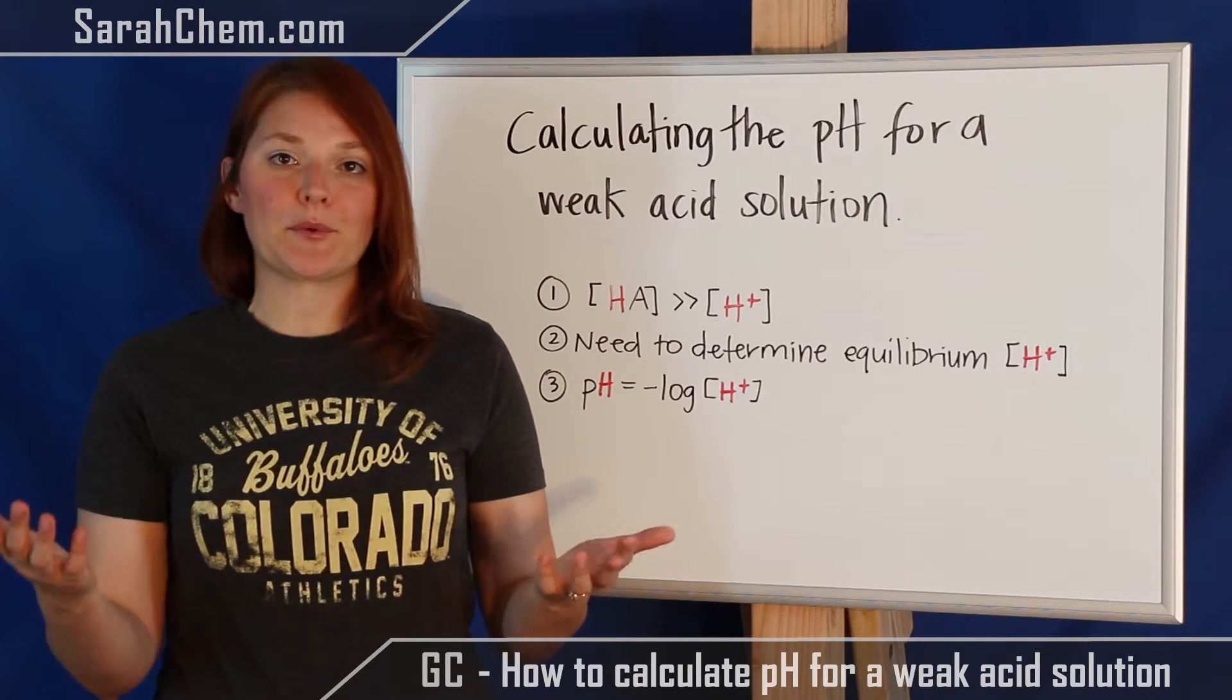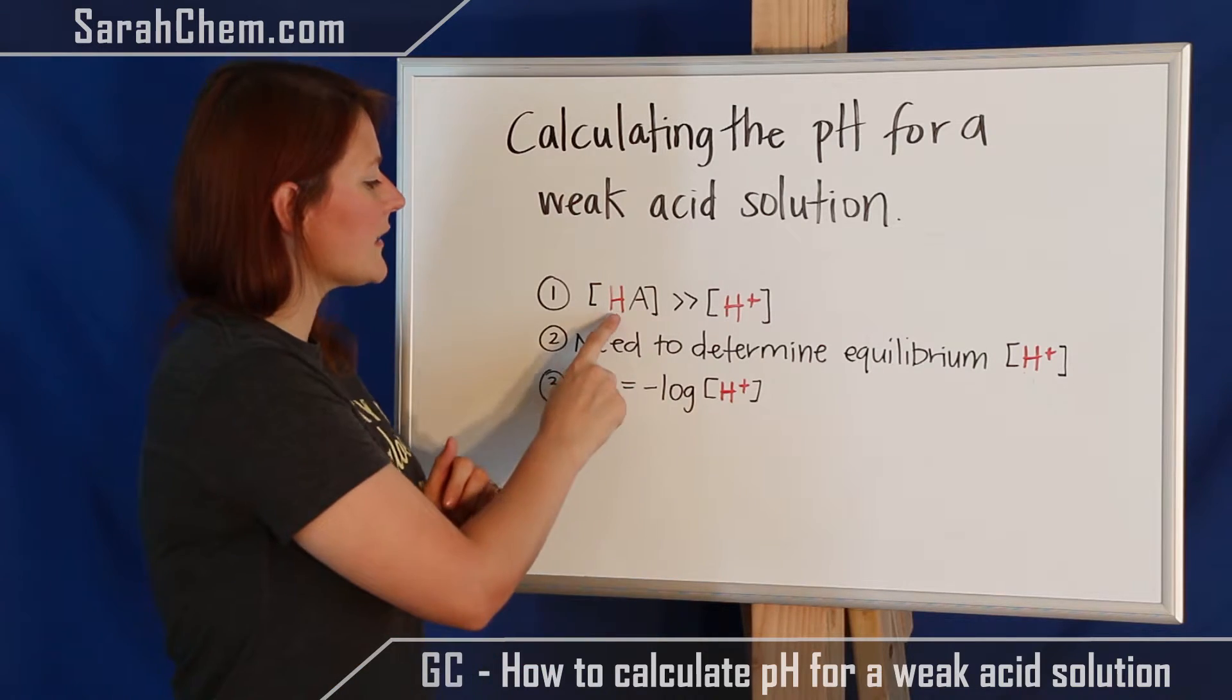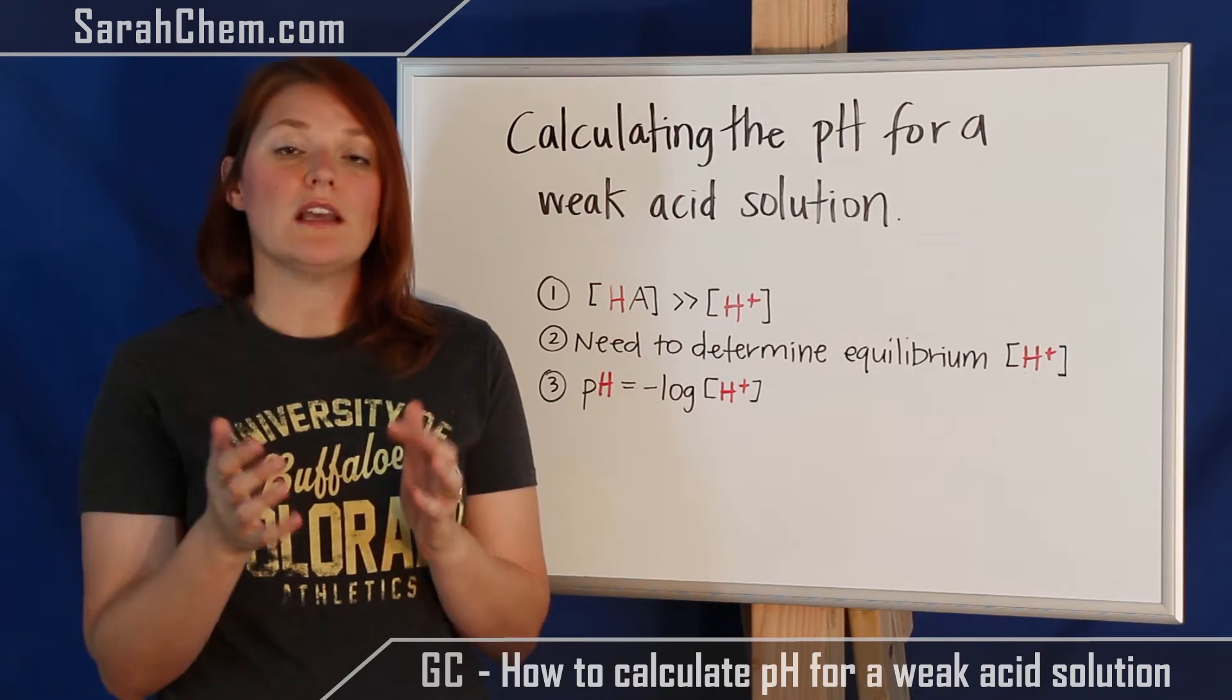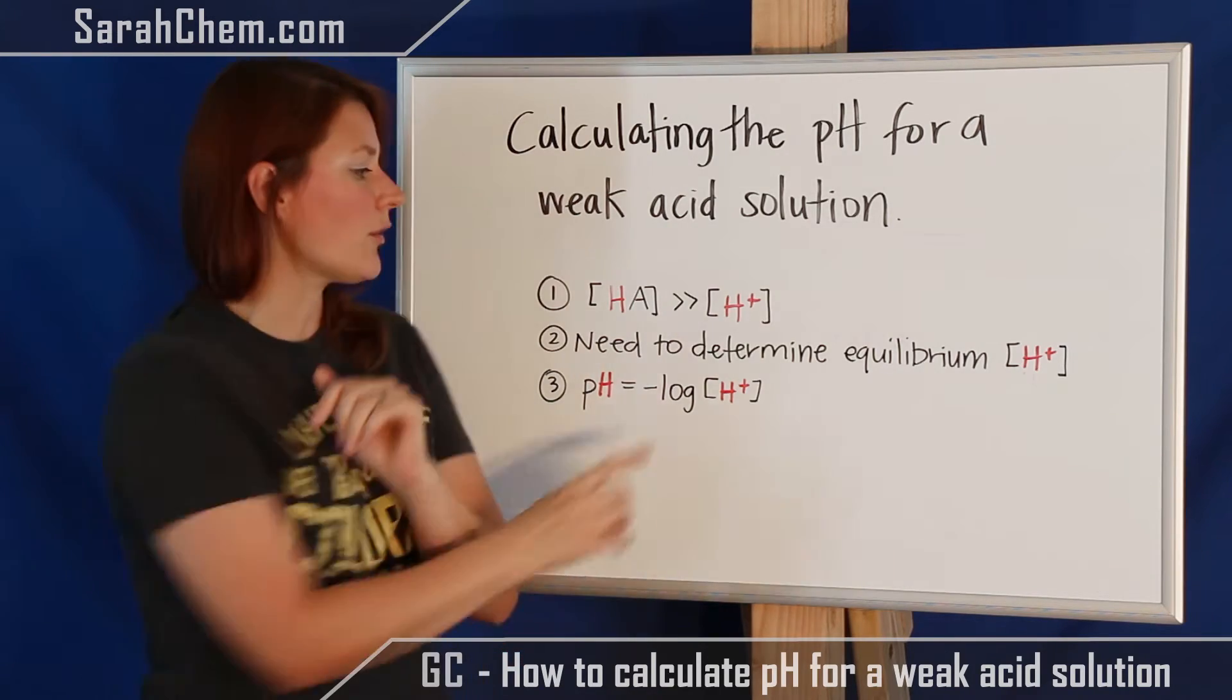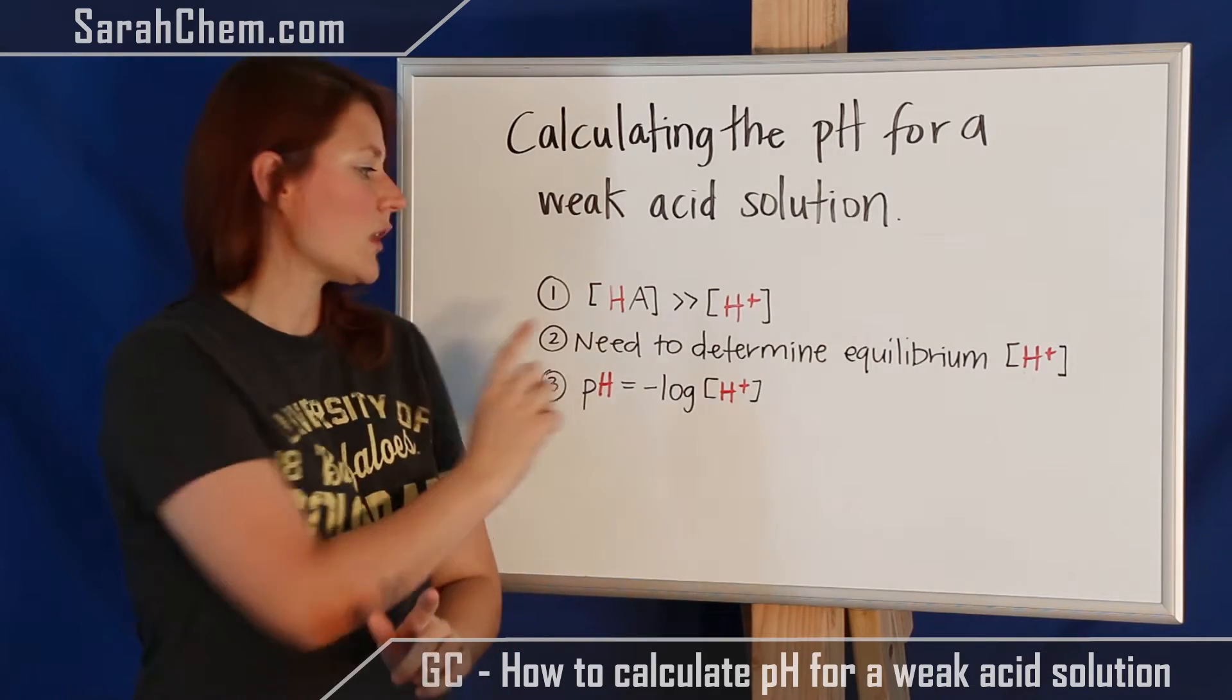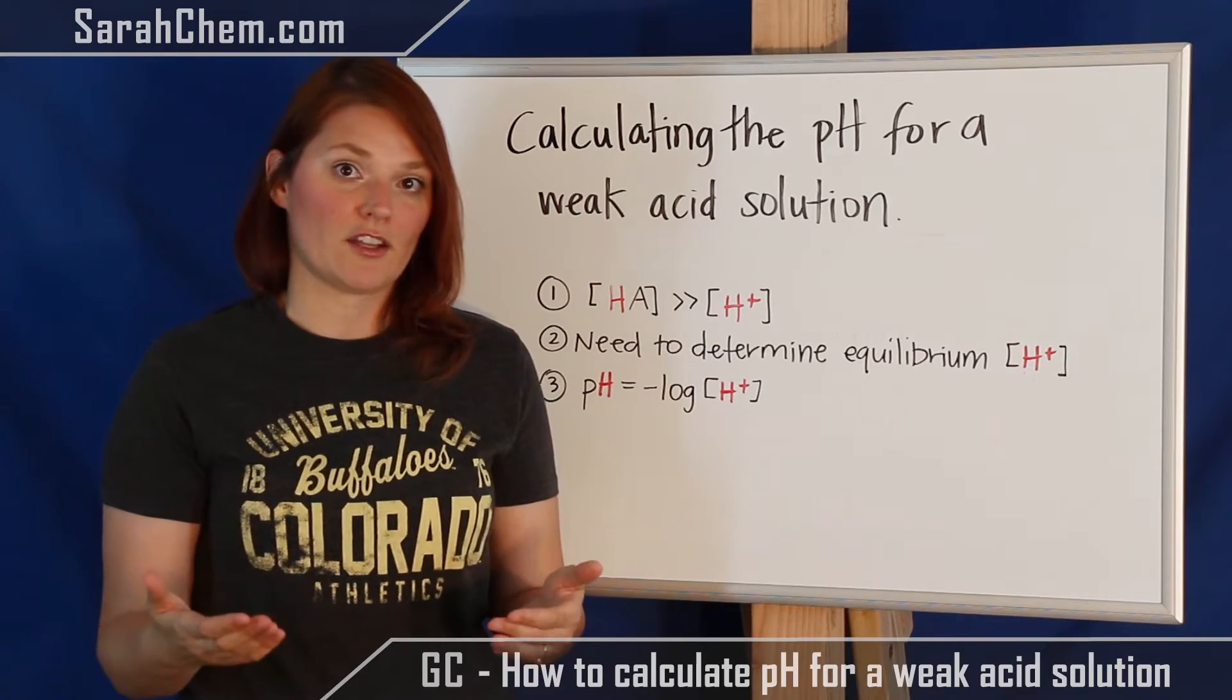Before we get started on an example, there's just a few things we want to make sure we're totally clear on. The first thing is that the concentration of the weak acid that we initially put into the solution is going to be much, much greater than the concentration of the H+ produced. So you cannot use the concentration given for the acid as the value of H+ in your calculation.